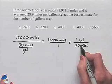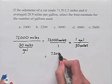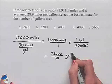Here, the unit for miles will divide out, and we'll end up taking 72,000 dividing by 30, and that would give us the number of gallons.